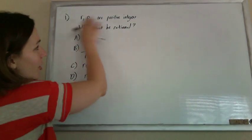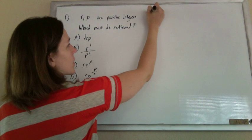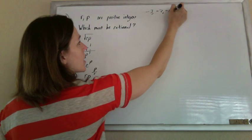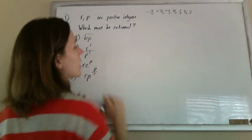Alright, so given that R and P are integers, remember integers are any pre-d numbers, whole numbers, positive or negative.